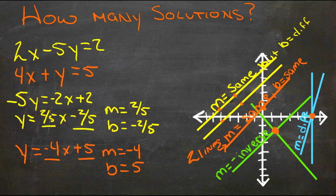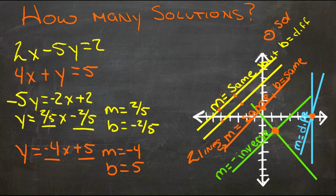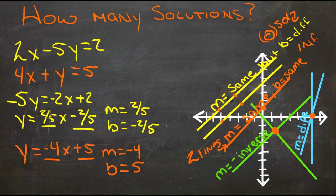So whereas here we had zero solutions, here we have infinite solutions. You can have as many solutions as you want because the two lines are right on top of each other.